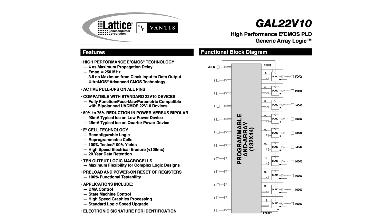There are some folks who think retrocomputing projects should only use technology available at the time, but I'm not one of those people. I think it's perfectly reasonable to use a GAL or other programmable logic device here. The GAL 22v10 is a drop-in replacement for the older 22v10 PAL, and other 8-bit systems in the early 80s used these sorts of devices — one well-known example being the PLA in the Commodore 64. Lattice no longer makes the GAL 22v10, but they're available on the reclaimed electronics market, and Microchip (formerly Atmel) still makes a compatible chip, the ATF 22v10.